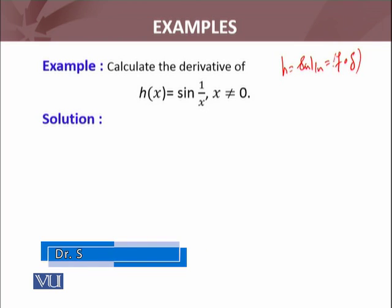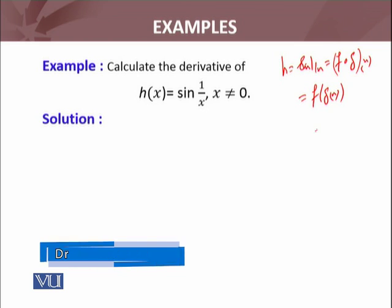F circle G of X. Composition of two functions is defined as follows: G(x) must be defined as 1/x, and F(x) must be defined as sin(x).